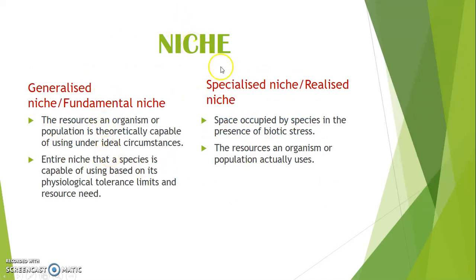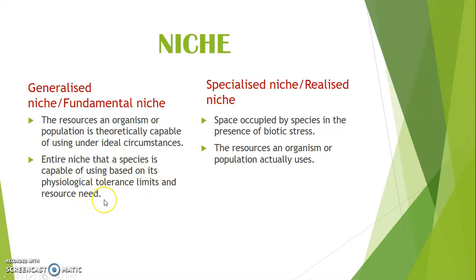Niche can be classified into two groups: generalized niche, also called fundamental niche, and specialized niche, also called realized niche. Generalized niche is the resource an organism or population is capable of using under ideal circumstances — the entire niche that a species is capable of using based on its physiological tolerance limits and resource needs. In one line, it is the fundamental niche.